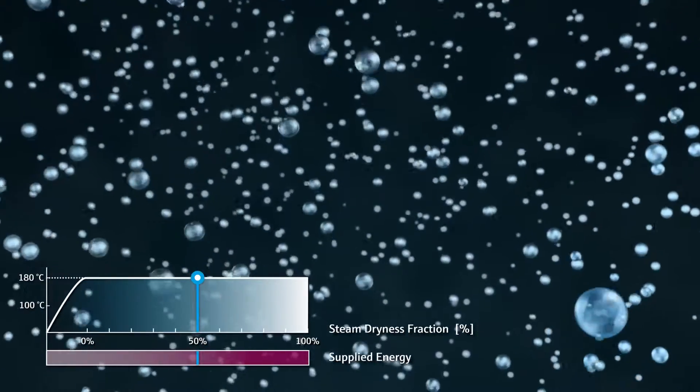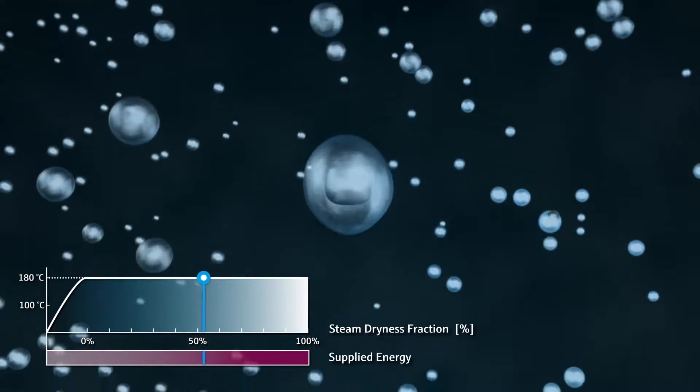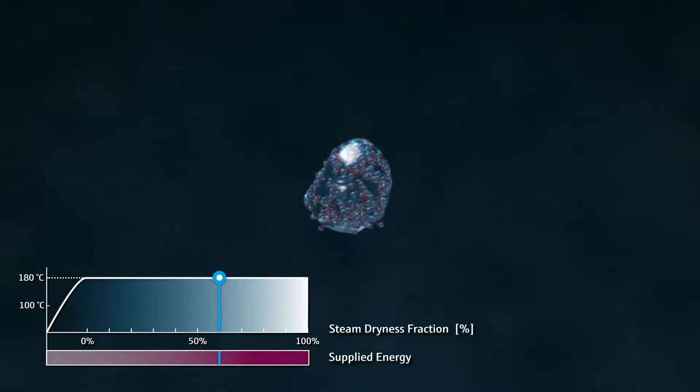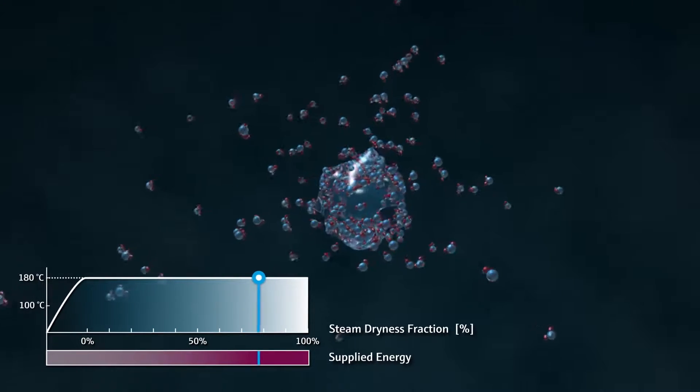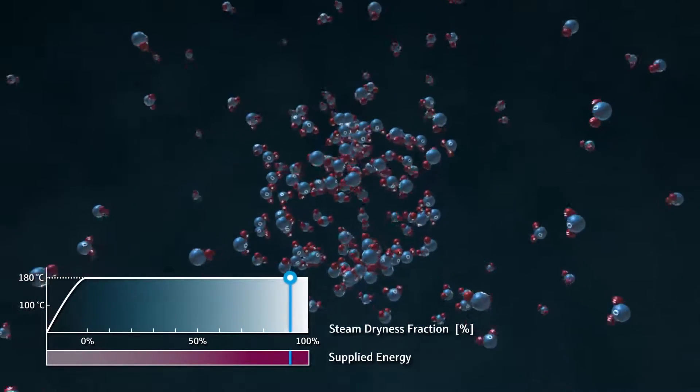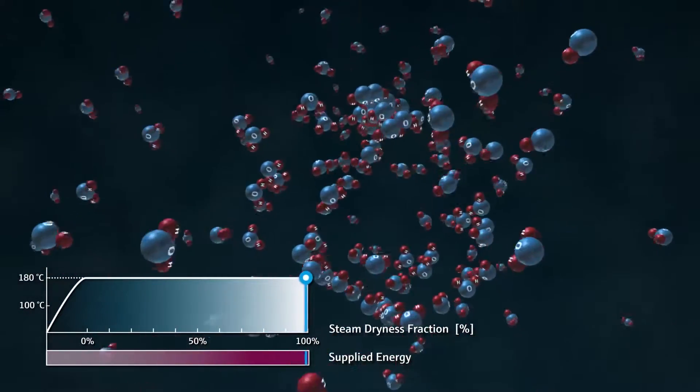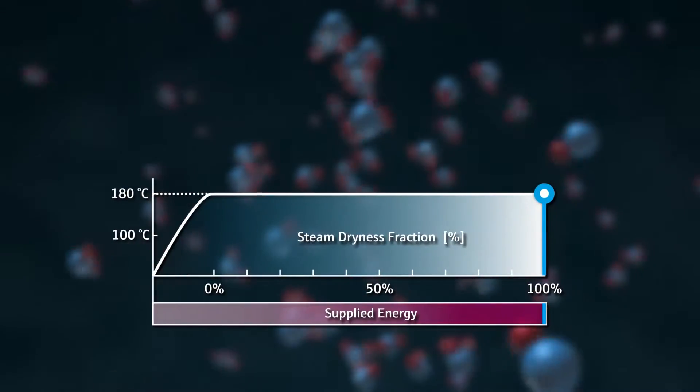Ultimately, the individual water molecules detach from the droplet surface and the water becomes completely gaseous, turning into invisible, so-called saturated steam. This transformation takes place without an increase in temperature and pressure. All of the energy supplied is now contained in the saturated steam and is known as evaporation heat or latent heat.